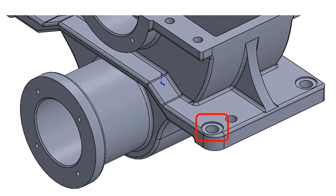Spot faces are typically used on uneven surfaces, such as a casting, and allow a washer or the head of a fastener to sit flush against the surface of the part.